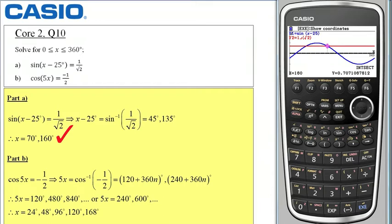In part B I have to solve cos of 5x equals minus a half. And you can see again in the range between 0 and 360 degrees I obtain the following answers: x equals 24, 48, 96, 120 and 168 degrees.